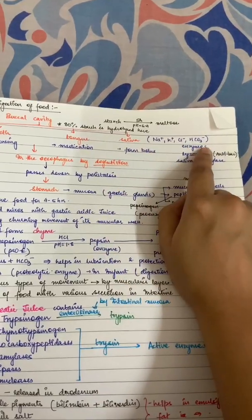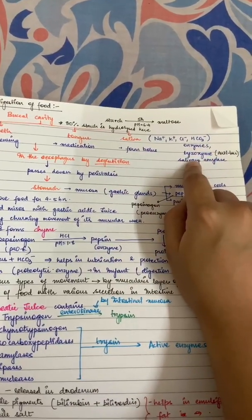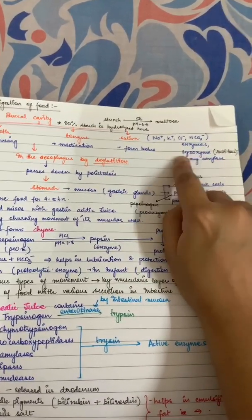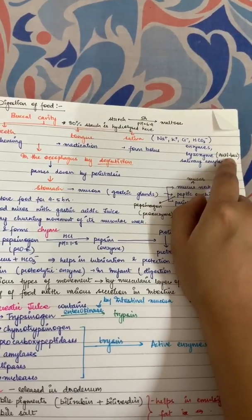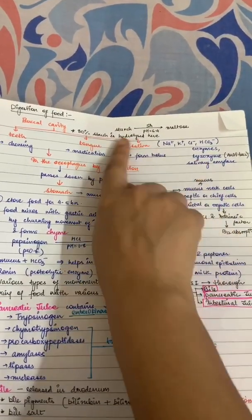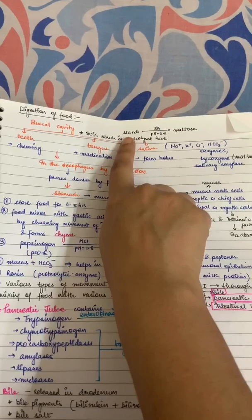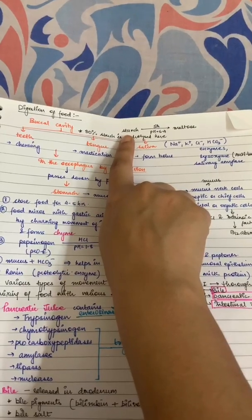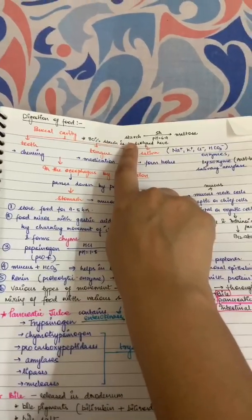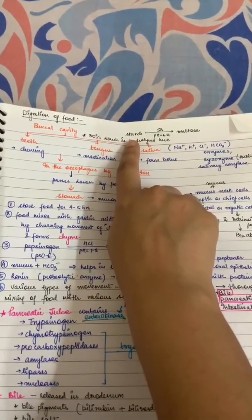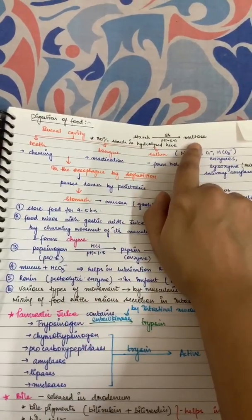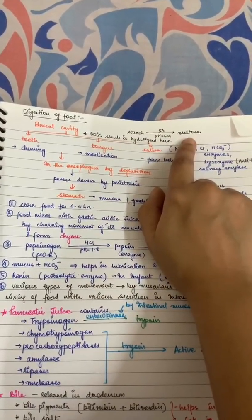Saliva contains ions, enzymes, lysozyme, and salivary amylase. Lysozyme is antibacterial. Salivary amylase acts on starch present in the food in the mouth and hydrolyzes it into maltose.